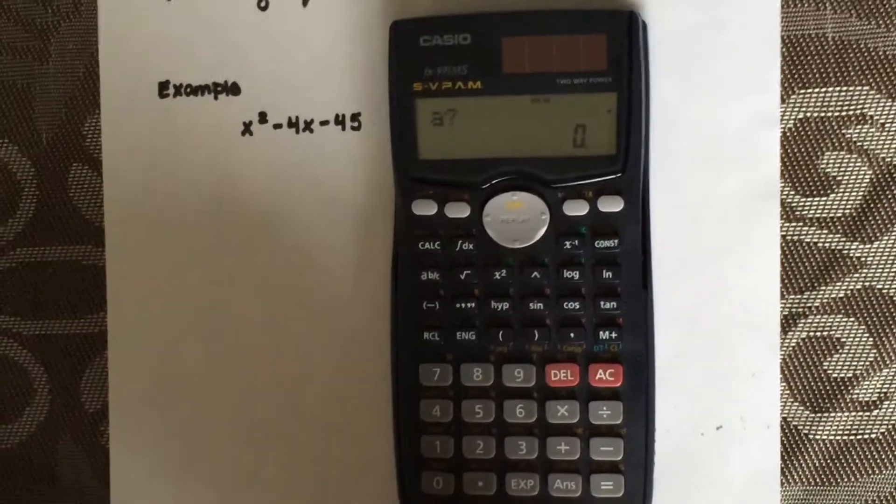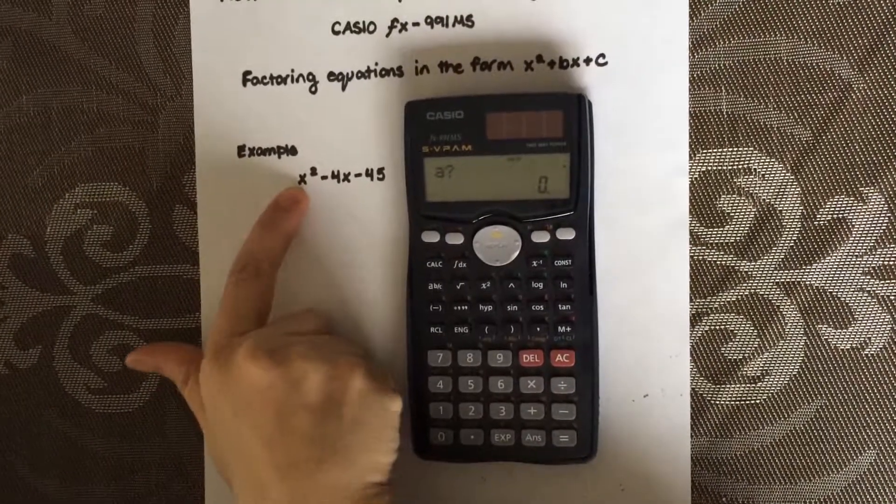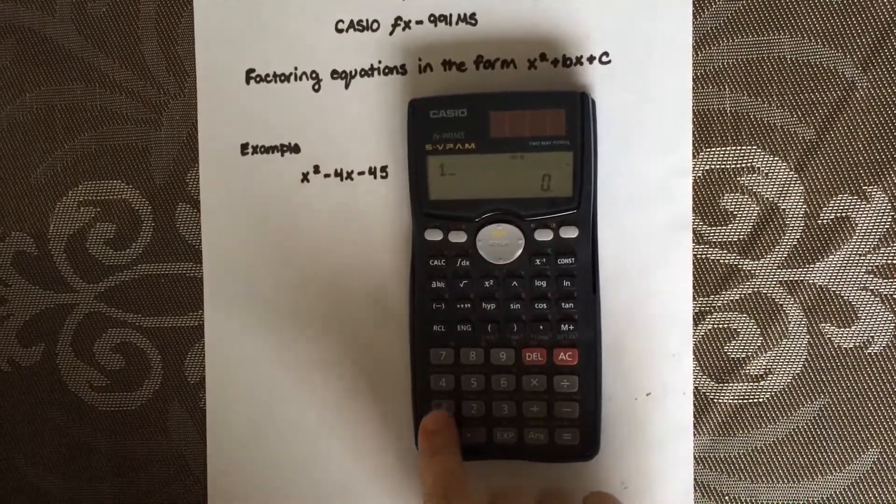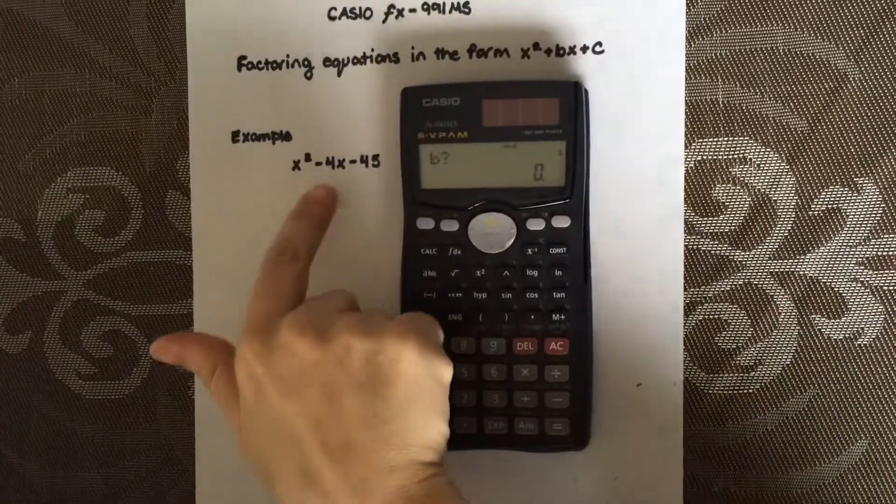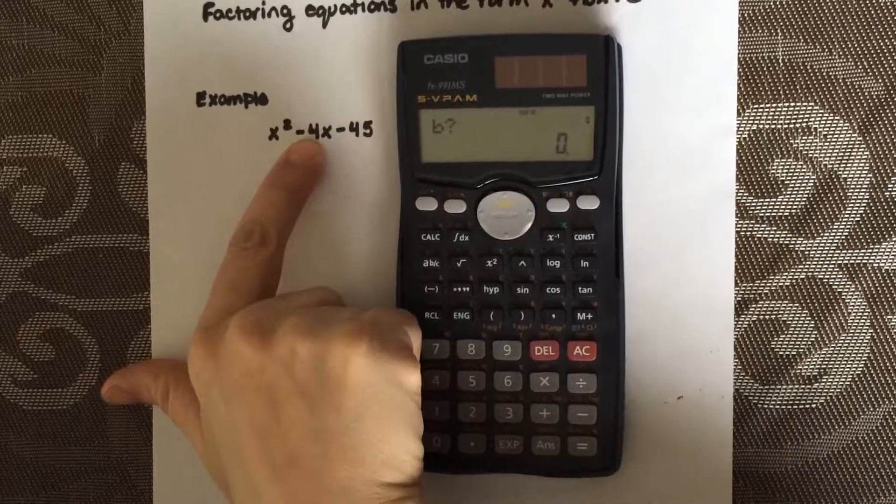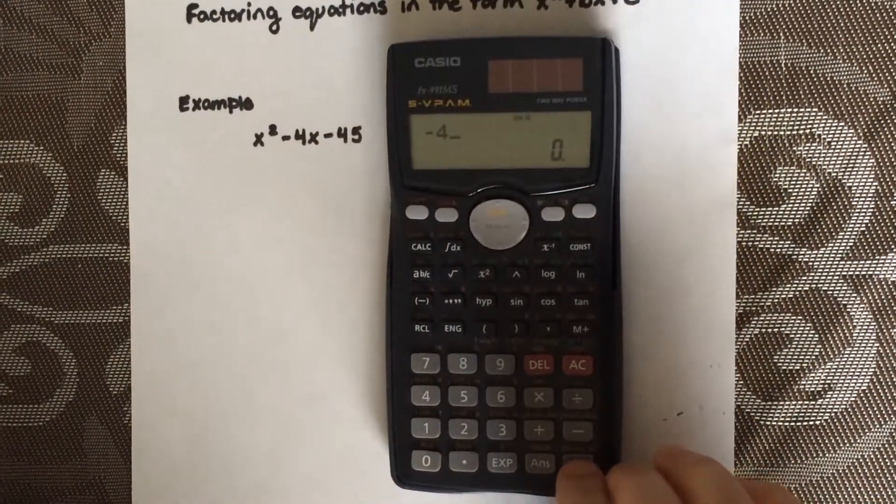Now you're going to want to enter the values for a, which is the value in front of x squared, so in this case it's 1. For b, which is the value in the middle in front of the x, so it's negative 4. Enter.